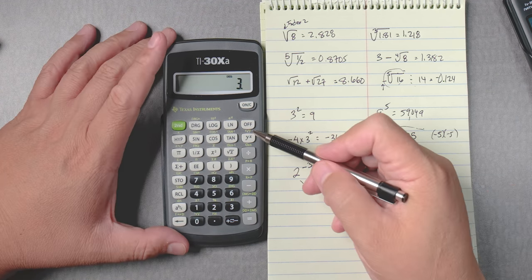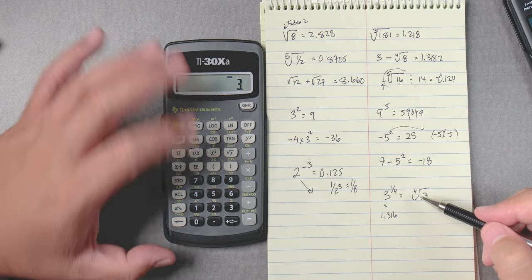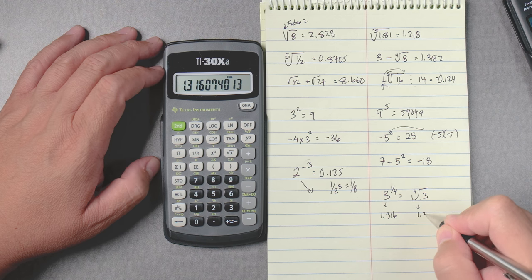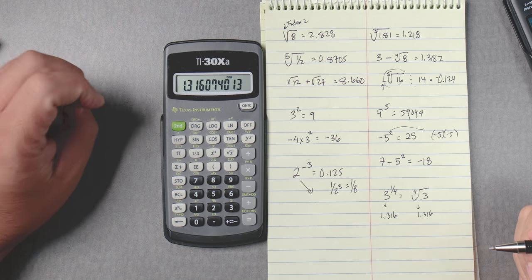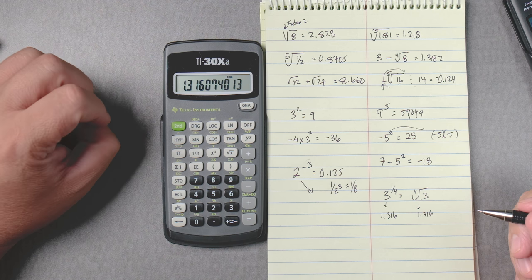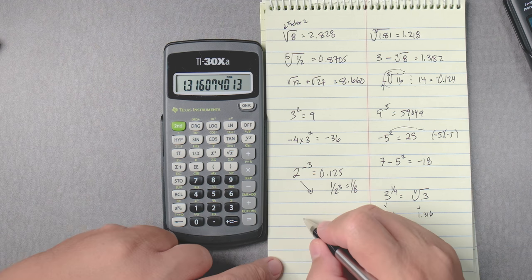And this one we go 3 second y to the x to get the green, then 4 the fourth root equals, same answer 1.316. Same results.